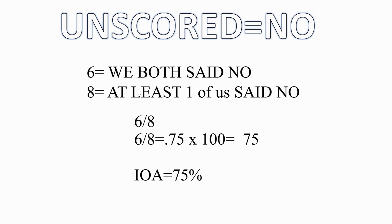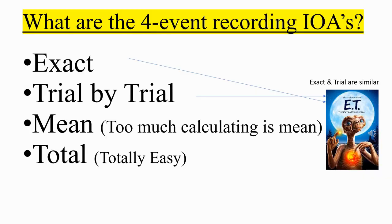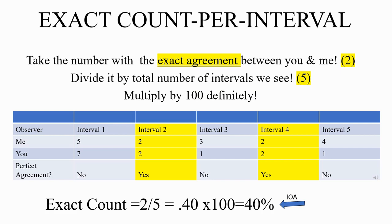Unscored interval IOA is recommended for behaviors that occur at relatively high frequencies. Now let's look at the four IOA types. With exact count per interval IOA, divide the number of times observers exactly agreed by the total number of intervals, then multiply by 100. For example: exact agreement occurred in two intervals out of five total. Multiply by 100 — IOA equals 40%.